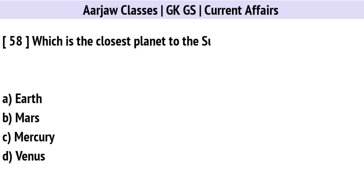Which is the closest planet to the Sun? The right option is C: Mercury.